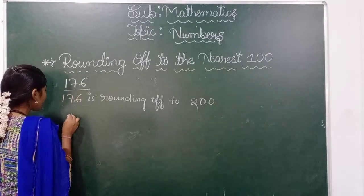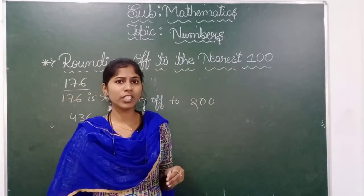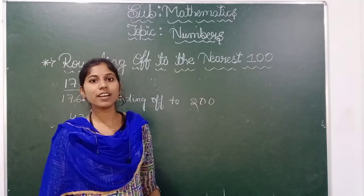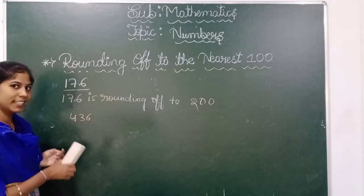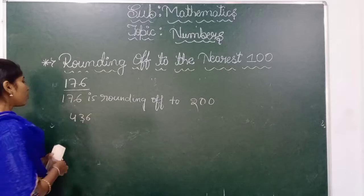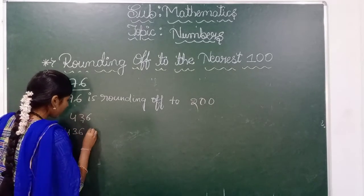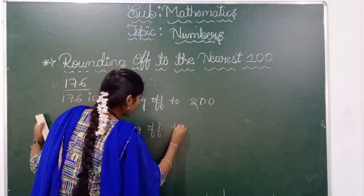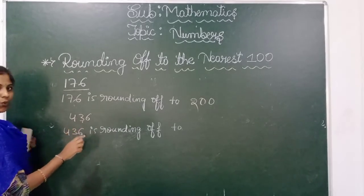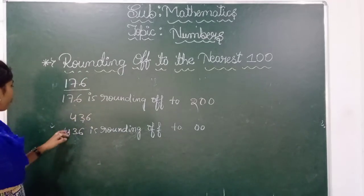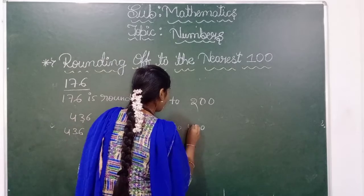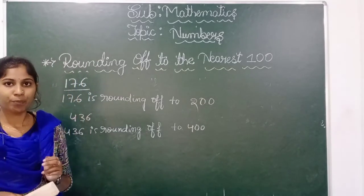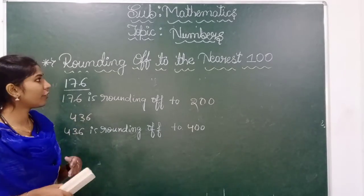Another example: 436. Rounding off 436 to the nearest hundreds place, the digit in the tens place is 3 — it is less than 4. So the ones and tens places become zero. No digit needs to be added to the hundreds place because the tens place digit is less than 5. So 436 is rounding off to 400. These are all the conditions for rounding off to the nearest hundreds place.